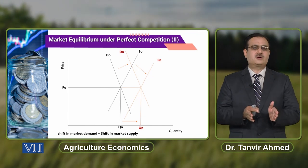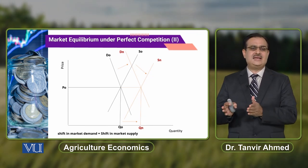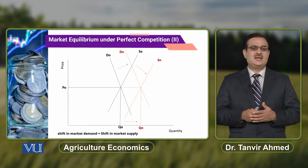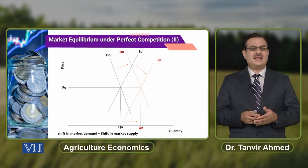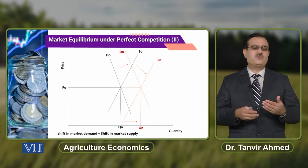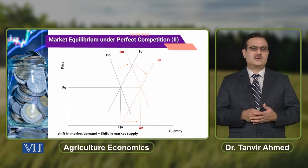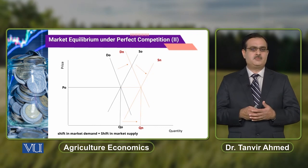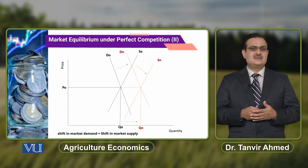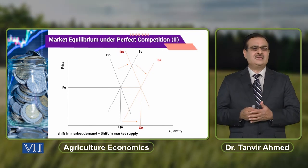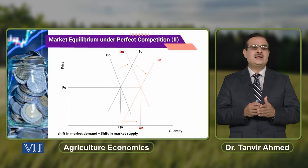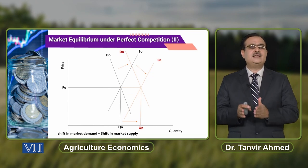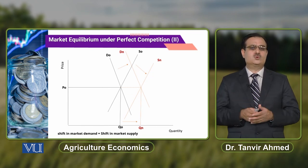In this particular case, there is no change in equilibrium price but equilibrium quantity has increased. When do you observe this phenomenon — no change in equilibrium price with only equilibrium quantity increasing? You observe this condition when the shift in market demand and the shift in market supply are equal.